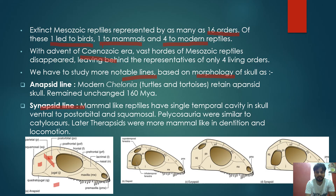In Euryapsida, the single temporal opening is located above the postorbital and squamosal bones. In Diapsida, two temporal openings are visible — both above and below, separated by the squamosal and postorbital bones. Based on these skull types, four different evolutionary lines are recognized.